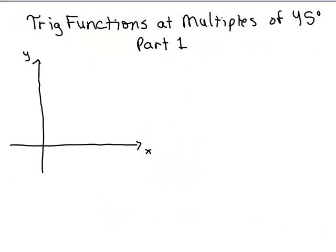We're going to figure out how to find the trig functions of an angle of 45 degrees or any multiple of 45 degrees. A 45 degree angle goes out straight up here, and if you take any point on here, you might notice it's the same value for the X as it is for the Y. This is like the line Y equals X.